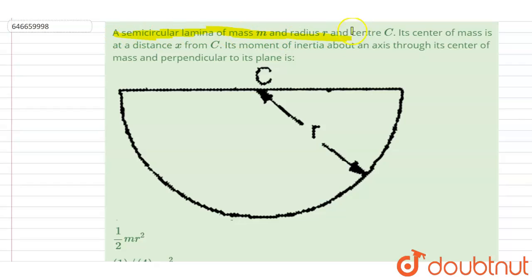...of mass m and radius r with center C. Its center of mass is at a distance x from C. Its moment of inertia about an axis through its center of mass and perpendicular to its plane is...